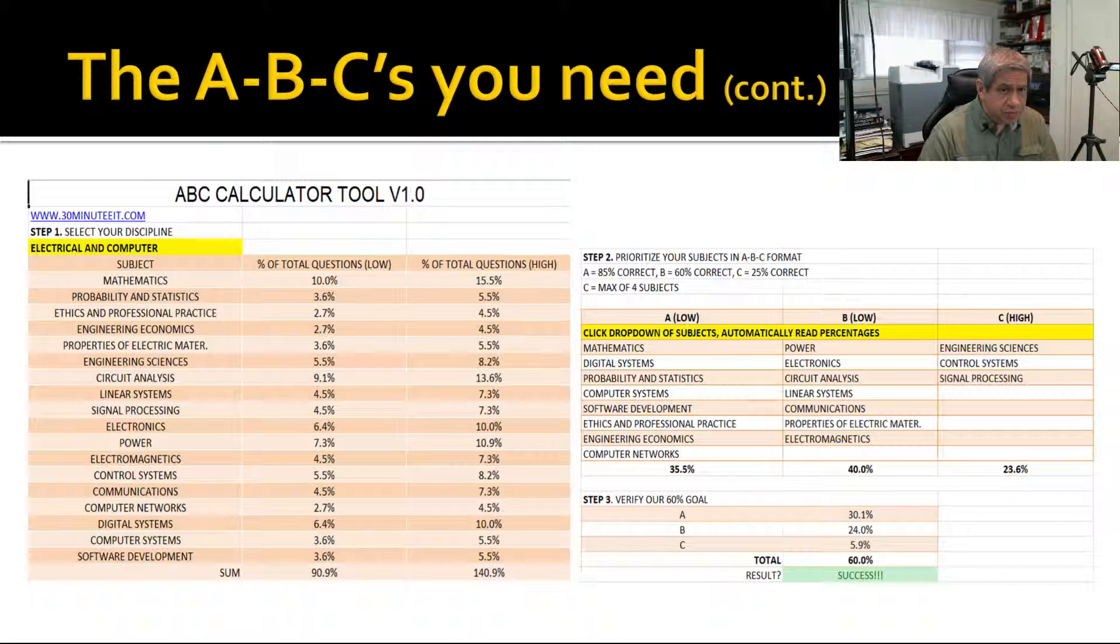I believe if you get his online book, he will give you the ability to register on a website and then download this tool. The version I have here is just a screen capture of it. When you look at this part here where it says 'Step 1: Select your discipline' with a yellow highlight on 'electrical and computer,' that's actually a dropdown and you can pick any one of the seven exams.